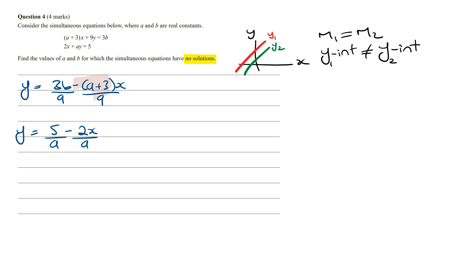And so equating the gradients of these lines, this means that minus A plus 3 over 9 has to equal minus 2 over A. The two negatives will cancel out, and then cross-multiply, we're going to get A times A plus 3 is going to equal 18. Expanding this and rearranging it, we're going to get A squared plus 3A minus 18 is equal to 0.